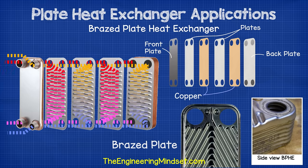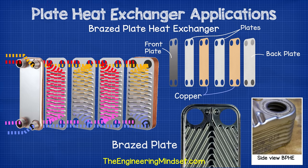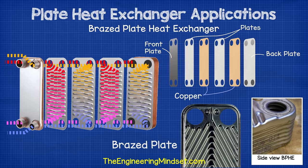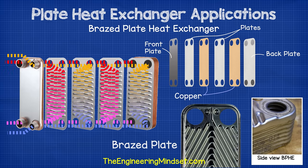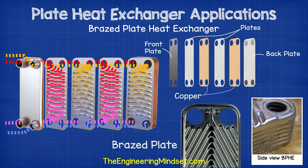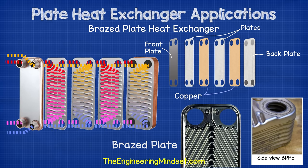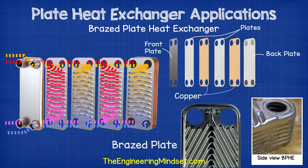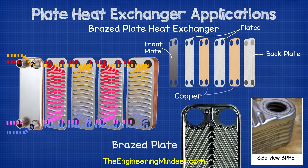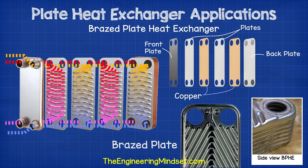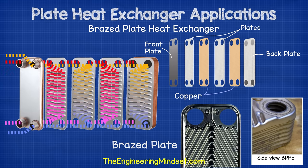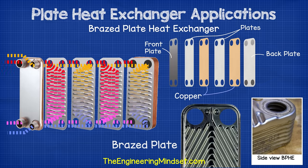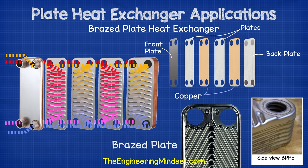Brazed plate heat exchangers are typically used in smaller applications, although in recent years larger units are being produced and applied to industry. These heat exchangers also use thin plates of metal to separate the fluids, but the plates are brazed together to completely seal the unit — no gaskets are used. The brazing and alignment of the plates forms the seal and dictates which channels each fluid can flow into. The plates and casing are typically made from stainless steel, while the brazing is usually copper, though materials vary depending on the fluid used.